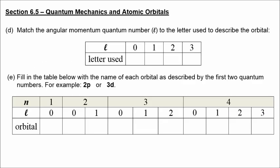The angular momentum quantum number describes the shape of the orbital. S orbitals are spherical; P orbitals have a figure-8 shape like two balloons attached together; D and F orbitals have more complicated shapes with multiple lobes. These four types of orbitals correspond to angular momentum quantum numbers of 0, 1, 2, and 3 respectively.